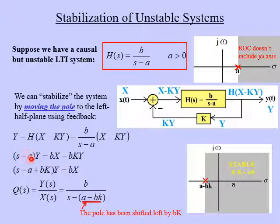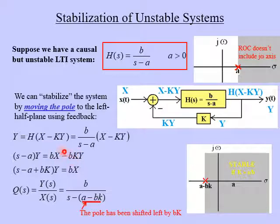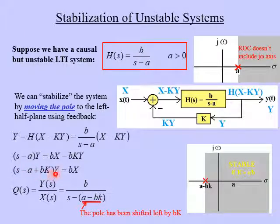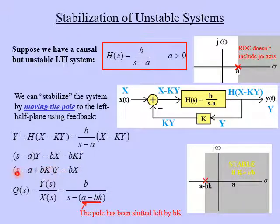On the left side we get (S minus A) times Y, and on the right side we get B times X minus B times KY. Let's group all our Y terms together on the left side — bring minus BKY over to the left side, leaving BX on the right. Factoring out Y on the left gives us (S minus A plus BK) times Y. So now we can find our overall transfer function Q(s), which is output Y divided by input X. Dividing both sides accordingly, we get that as our denominator.